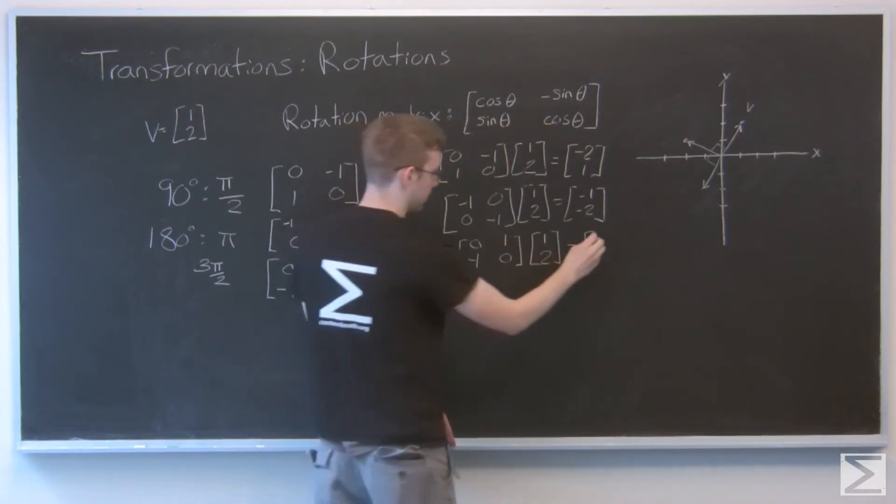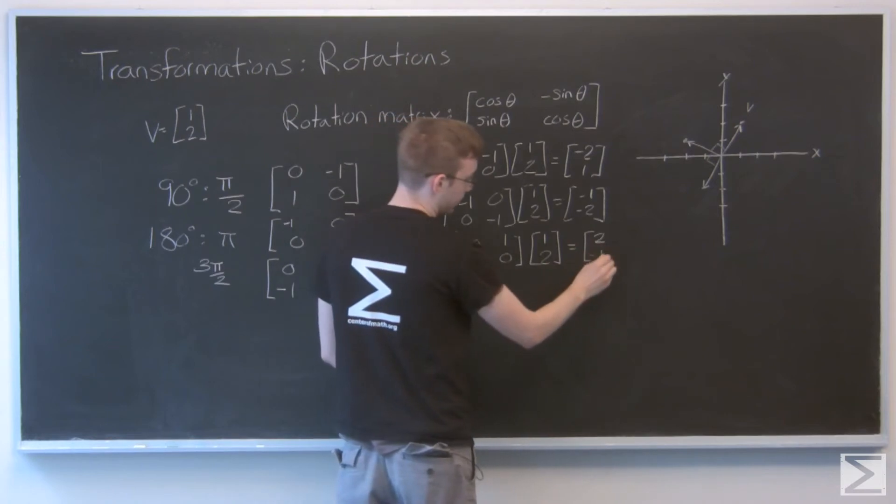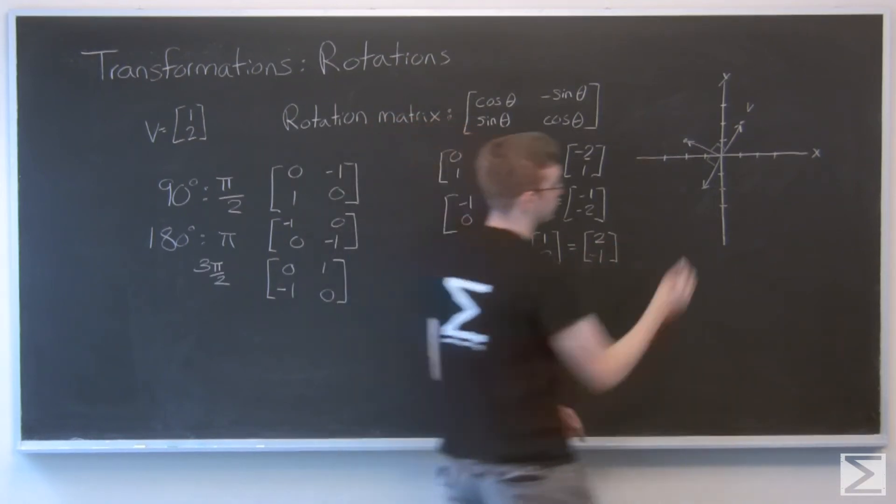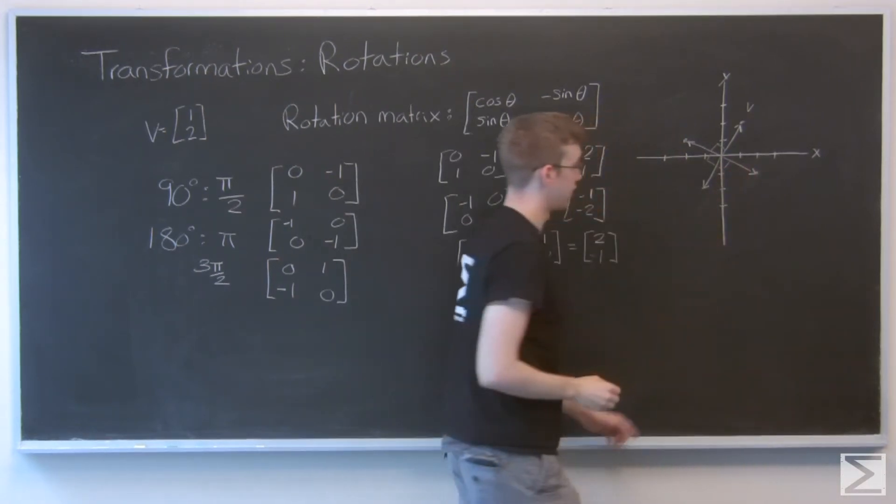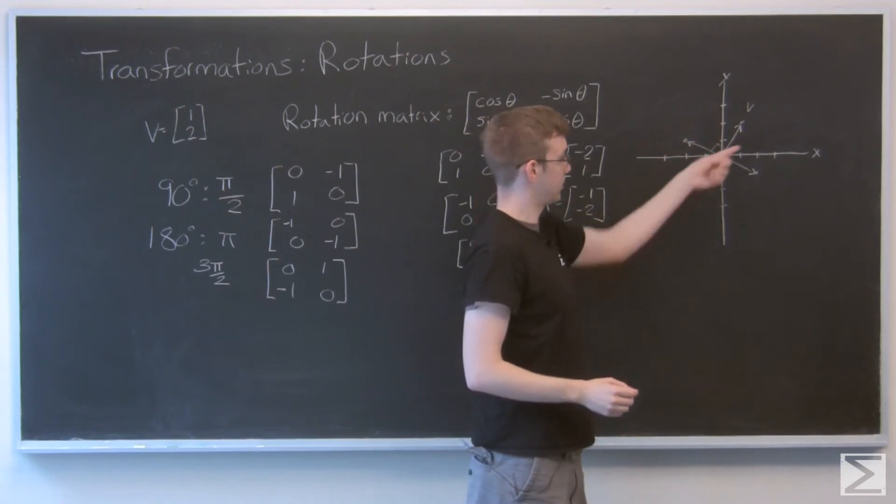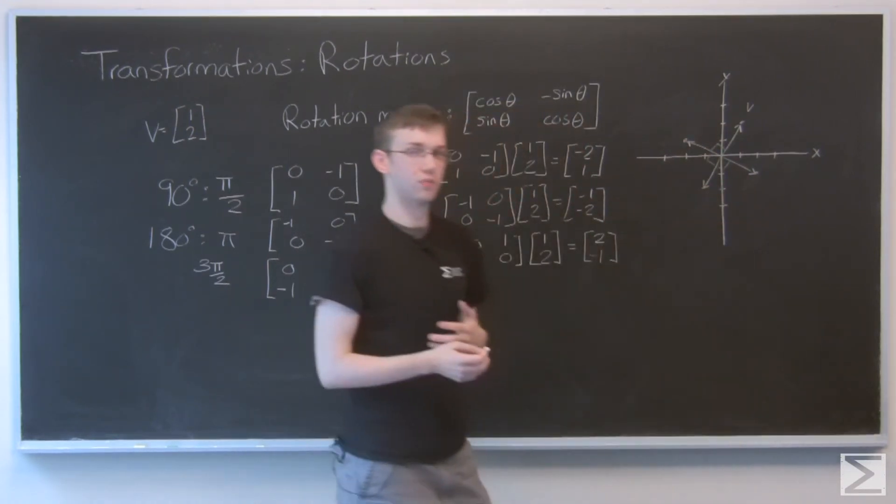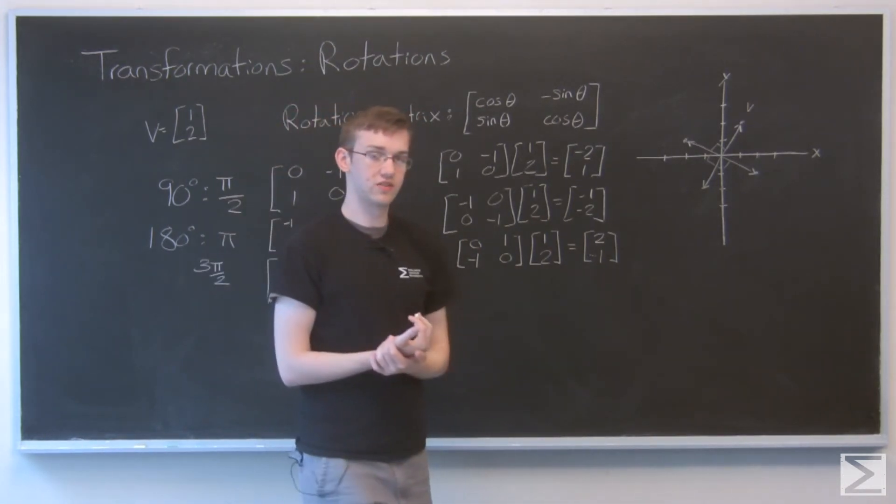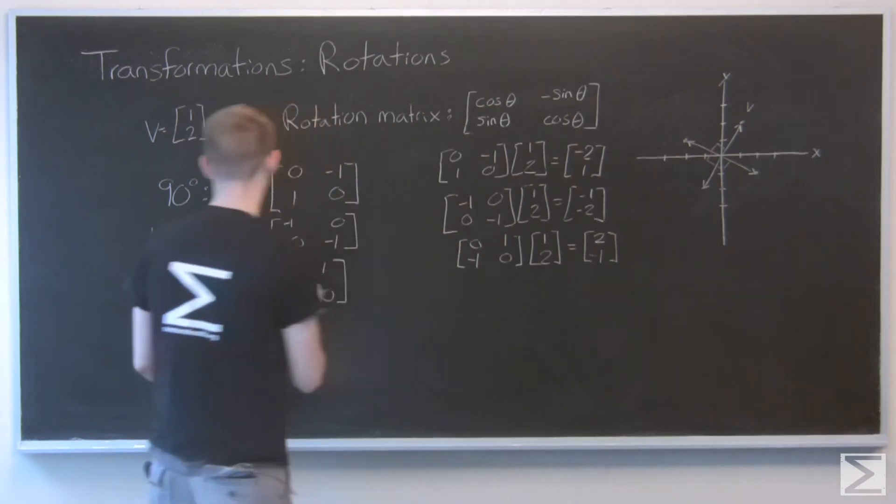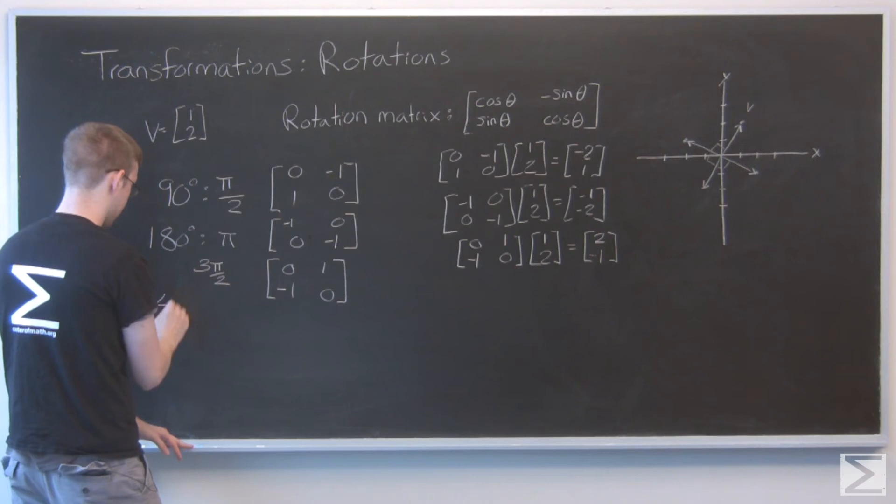So here we get 2 and negative 1. We go out 2, down 1. That's our last vector. Another 90 degrees. So here we have each of the four points of our circle. What if our angle is not a function of 90 degrees? I just did those because it's the easiest to compute with polar coordinates. But let's do 45 degrees as well.